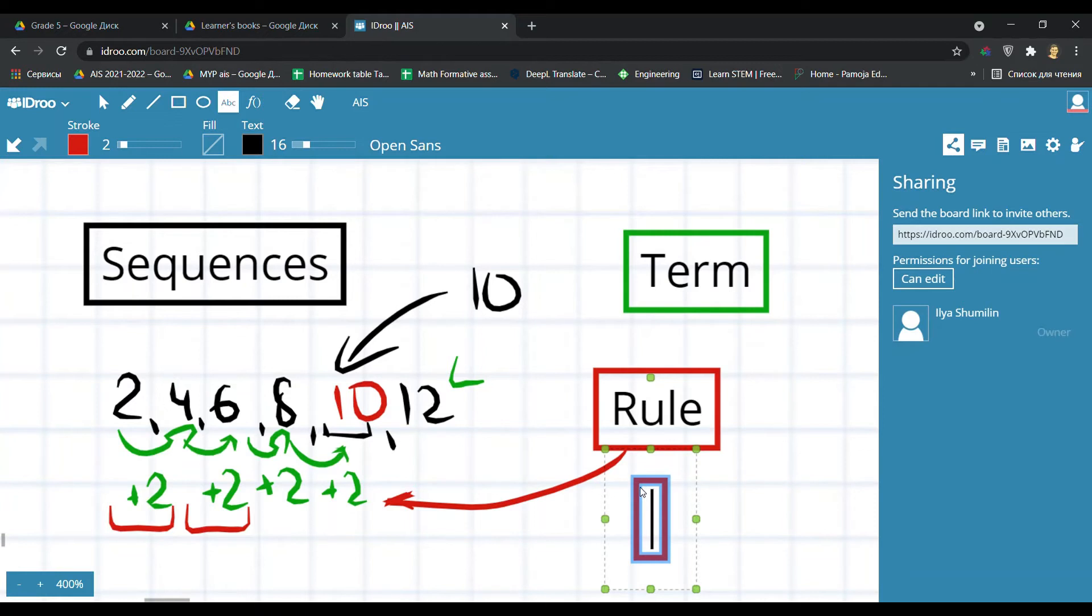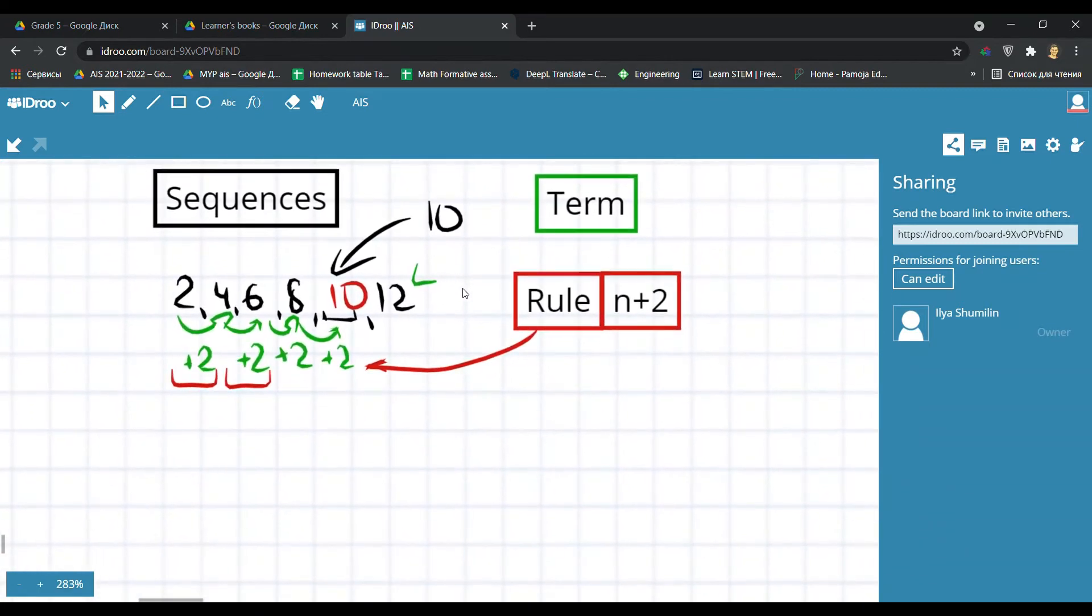We can say that to each number we should add 2, and here is the rule. The rule is n plus 2. This is the rule actually. The next thing we should learn is something more difficult. You are smart enough to understand the next sequence.